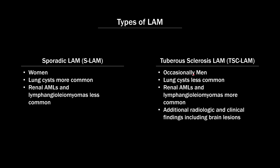It's in tuberous sclerosis-associated cases that men can occasionally be affected. The imaging findings are a little different between sporadic LAM and tuberous sclerosis-associated LAM. Sporadic LAM has more lung cysts, while tuberous sclerosis patients are more likely to have renal AMLs and lymphangioliomyomas, plus additional radiologic and clinical findings including brain lesions that are absent in sporadic LAM.